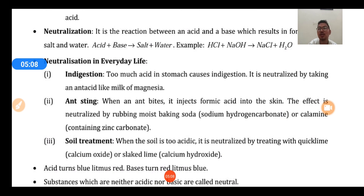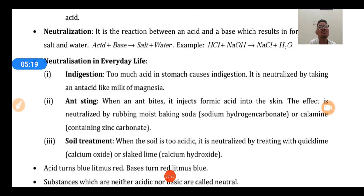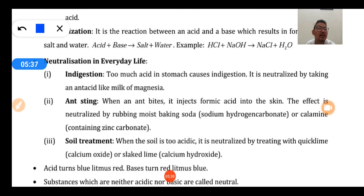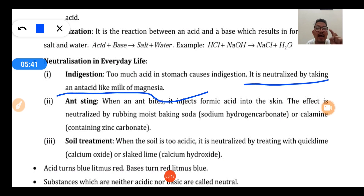Neutralization reactions also take place in daily life. When we eat too much spicy food, indigestion occurs. The acid in our stomach causes irritation when it touches the walls of the food pipe, which lack a protective mucus layer. To heal this, we neutralize it by taking an antacid like milk of magnesia, which is present in Eno.